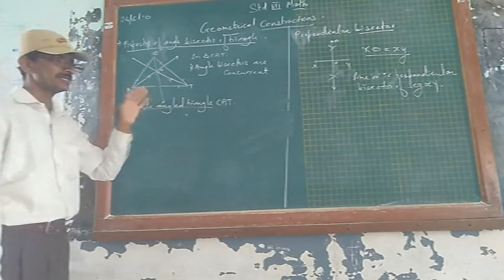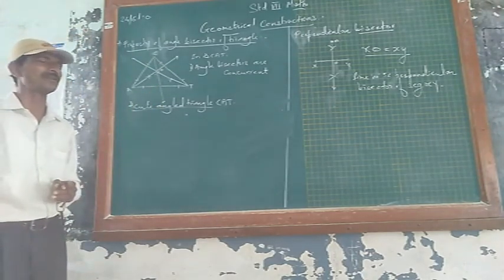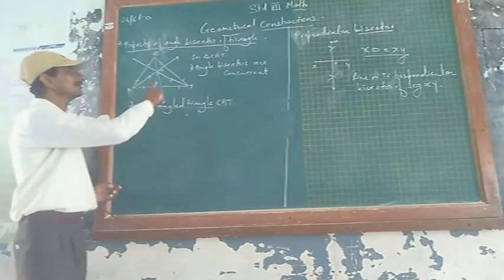Now you can draw angle bisectors of any triangle, whether it is acute angle, obtuse angle or right angle.